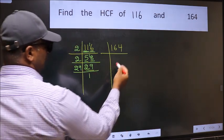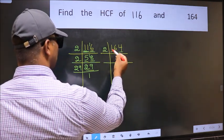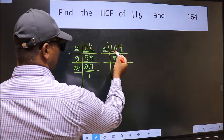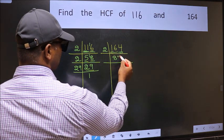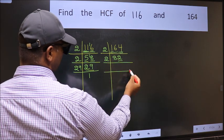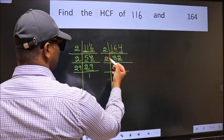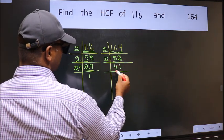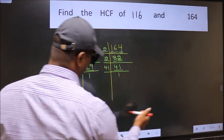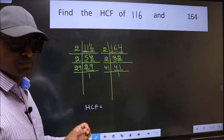For 164: the last digit is 4, which is even, so take 2. 164 divided by 2 gives 82. 82 divided by 2 gives 41. 41 is a prime number, so 41 once is 41. Therefore 164 = 2 × 2 × 41.